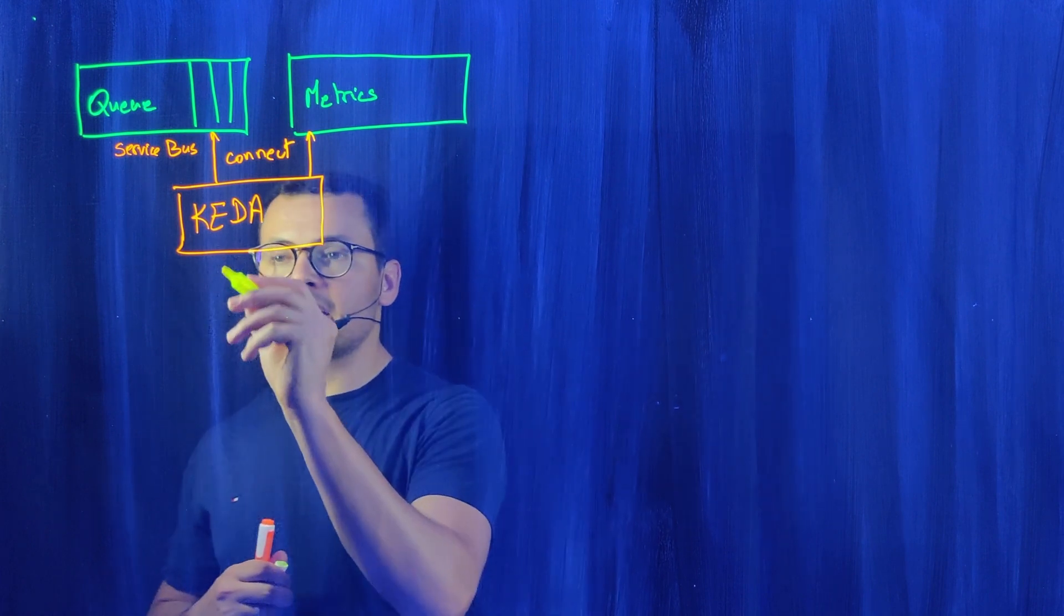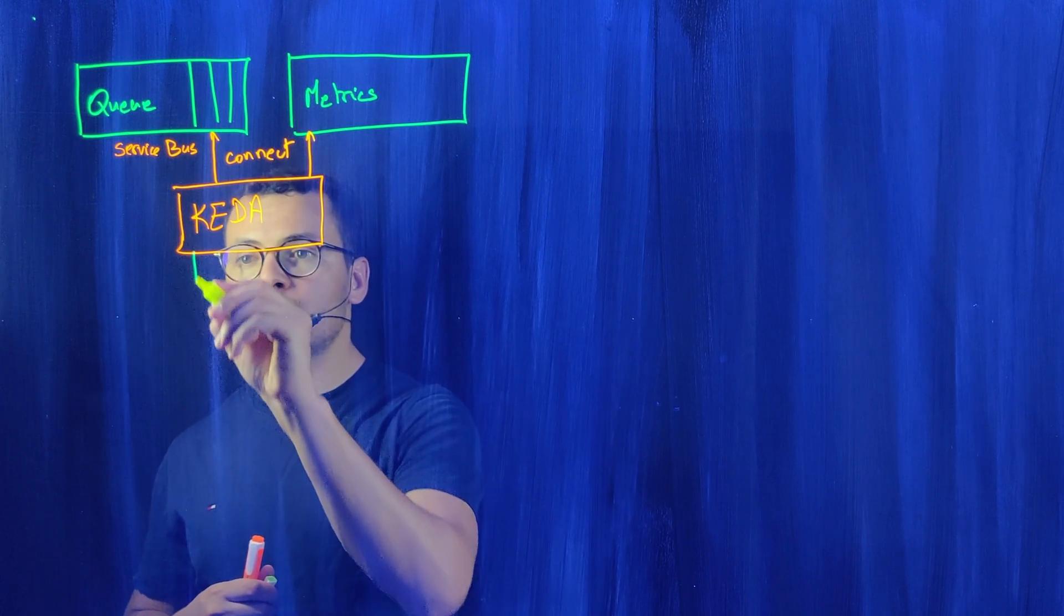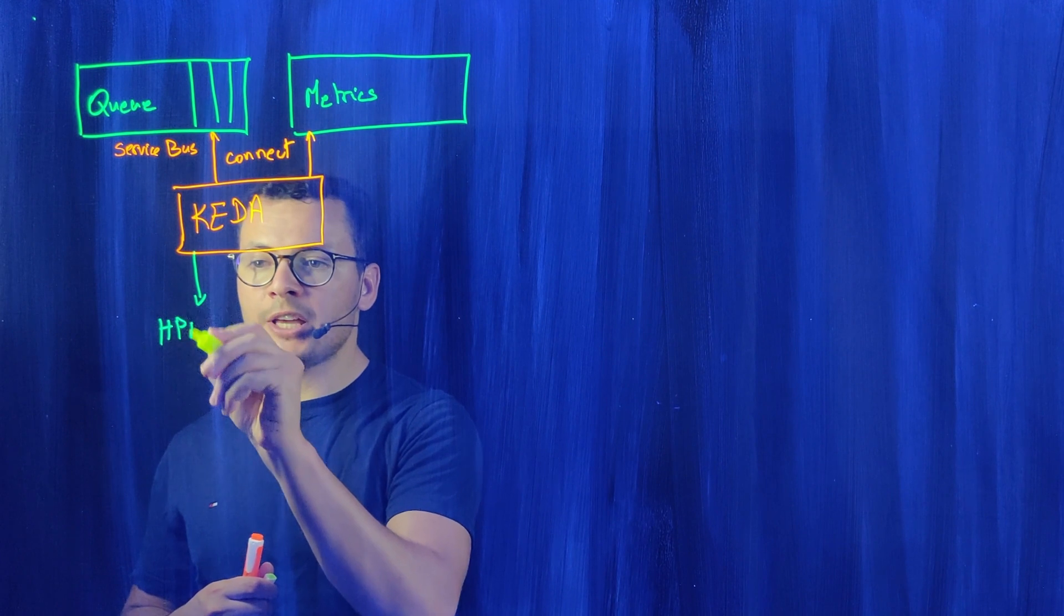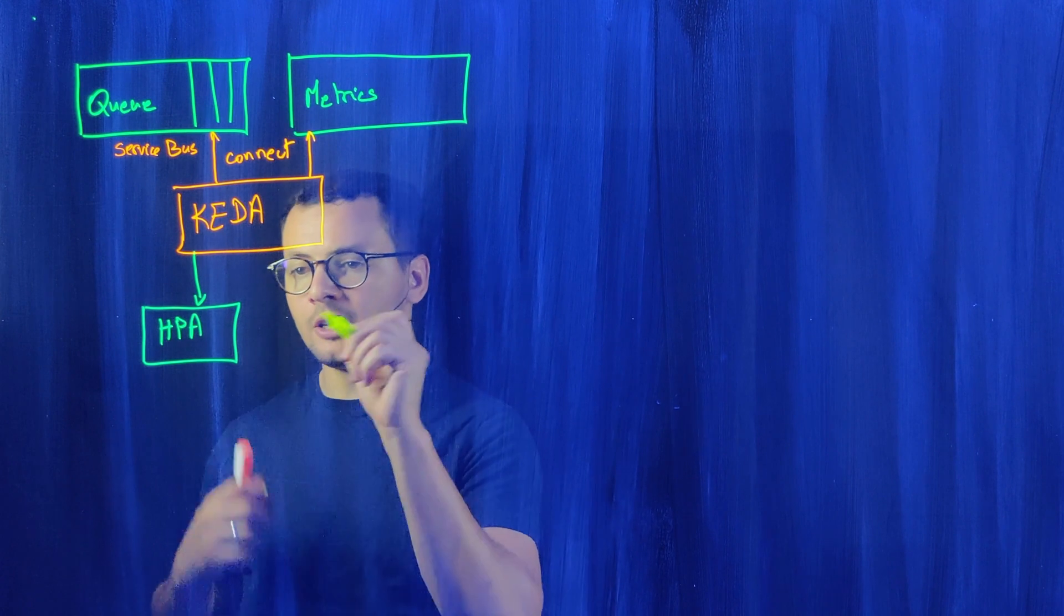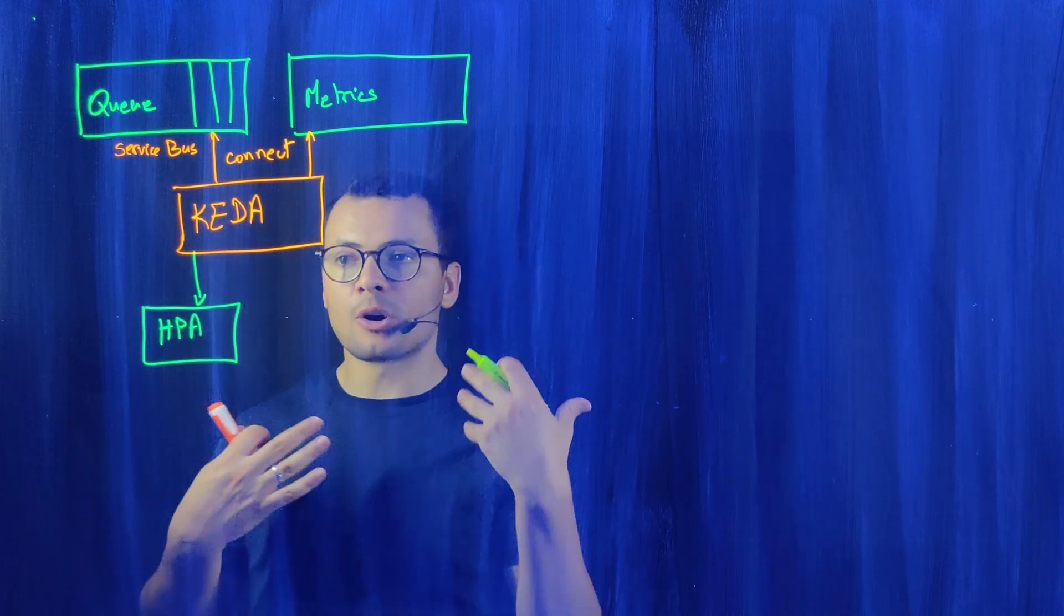Typically within an AKS cluster, we have the HPA, the Horizontal Pod Autoscaler. KEDA will first go to configure the HPA. Remember, the HPA is the Horizontal Pod Autoscaler, and it is the component in Kubernetes that decides about the number of replicas for my pods.